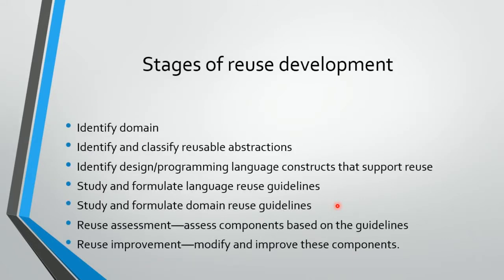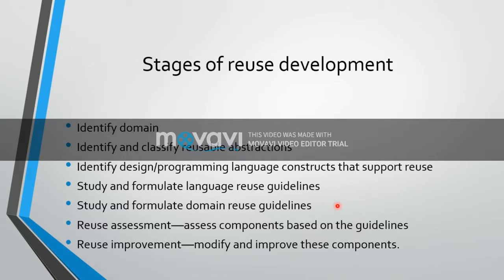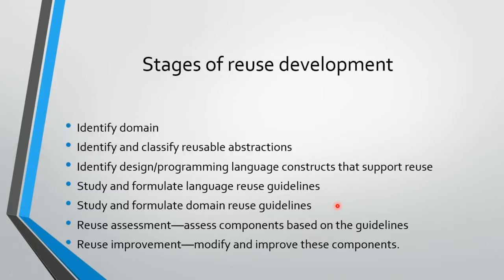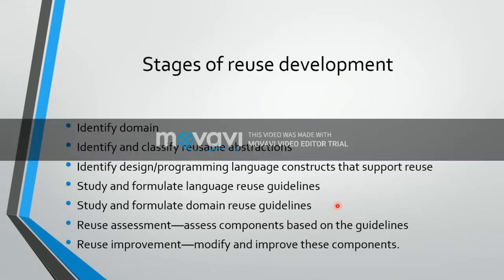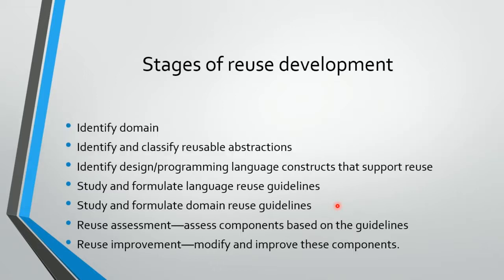The stages of reuse development are: first, identify the domain; then identify classifiable reusable abstractions; identify design and programming language constructs that support reuse — mostly C does not support reuse, while Java does support reuse, whereas Cobalt, COBOL, and Fortran do not support reuse. Then study and formulate language reuse guidelines, study and formulate domain reuse guidelines, perform reuse assessment by assessing components based on guidelines, and perform reuse improvement by modifying and improving components. Sometimes we reuse a component to improve an existing project, being careful that no unnecessary changes are made.